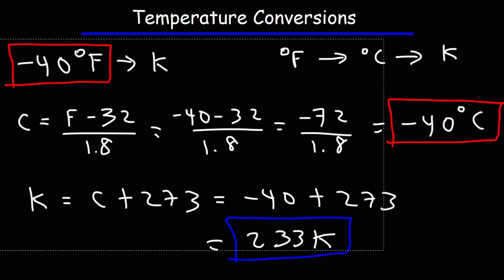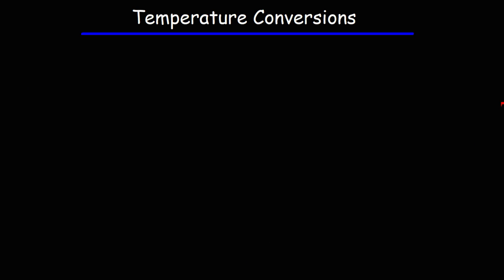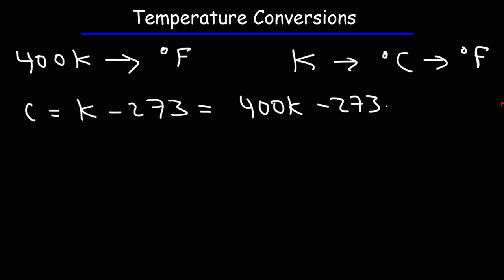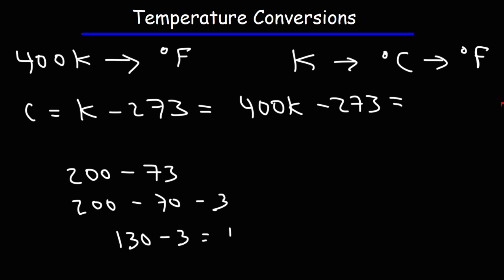Now let's try the reverse: converting from Kelvin to Fahrenheit. If we have a temperature of 400 Kelvin, what is that in Fahrenheit? We go from Kelvin to Celsius first: C = K − 273, so 400 minus 273. 400 minus 200 is 200, then 200 minus 73 is 127. So 400 Kelvin equals 127 degrees Celsius.